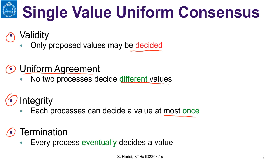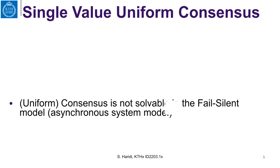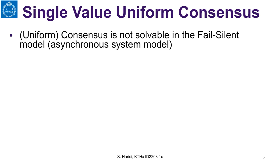If you think about this, termination is a liveness property, and the others — validity, uniform agreement, and integrity — are safety properties. This is the context of single-value uniform consensus that we want to solve in this lecture.